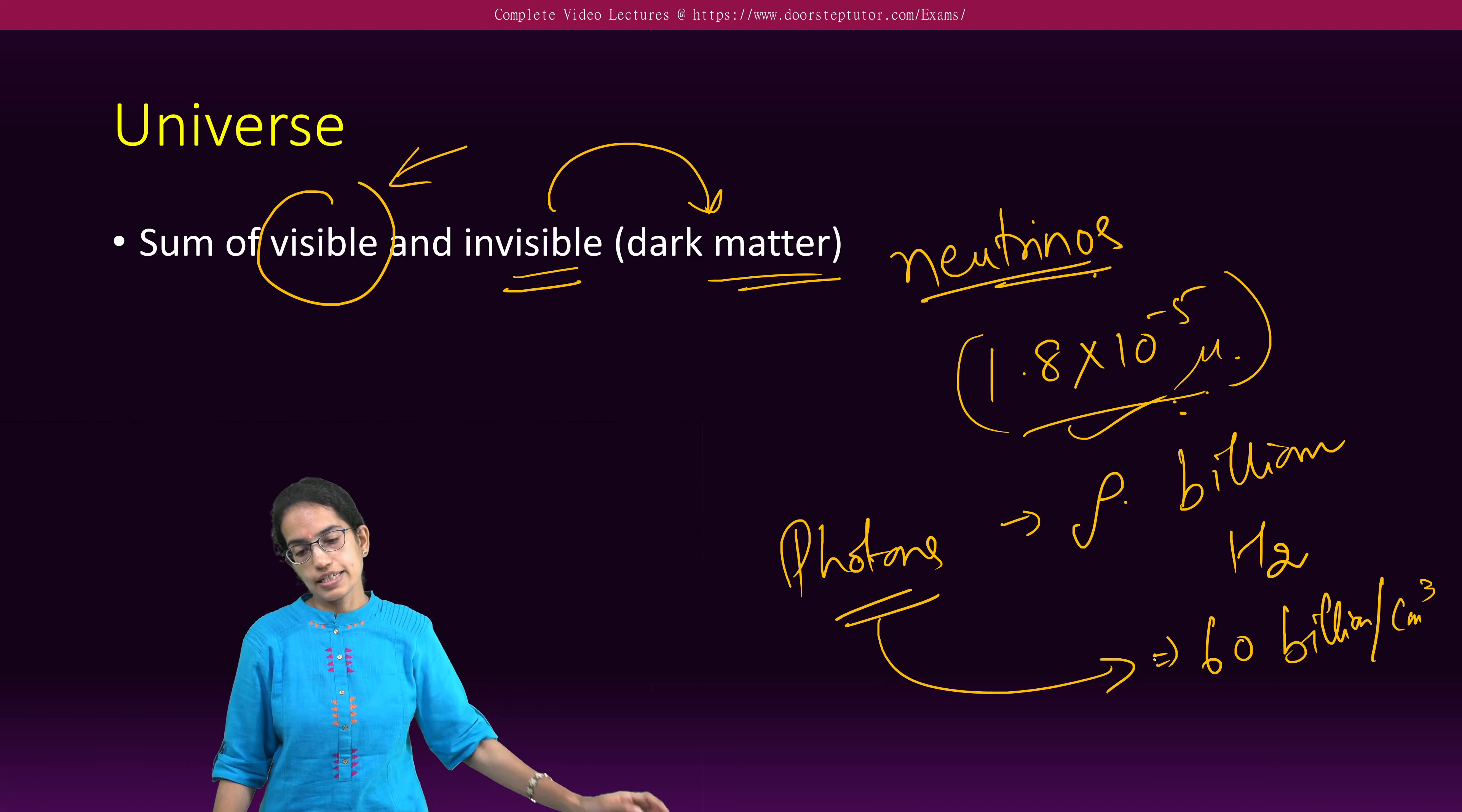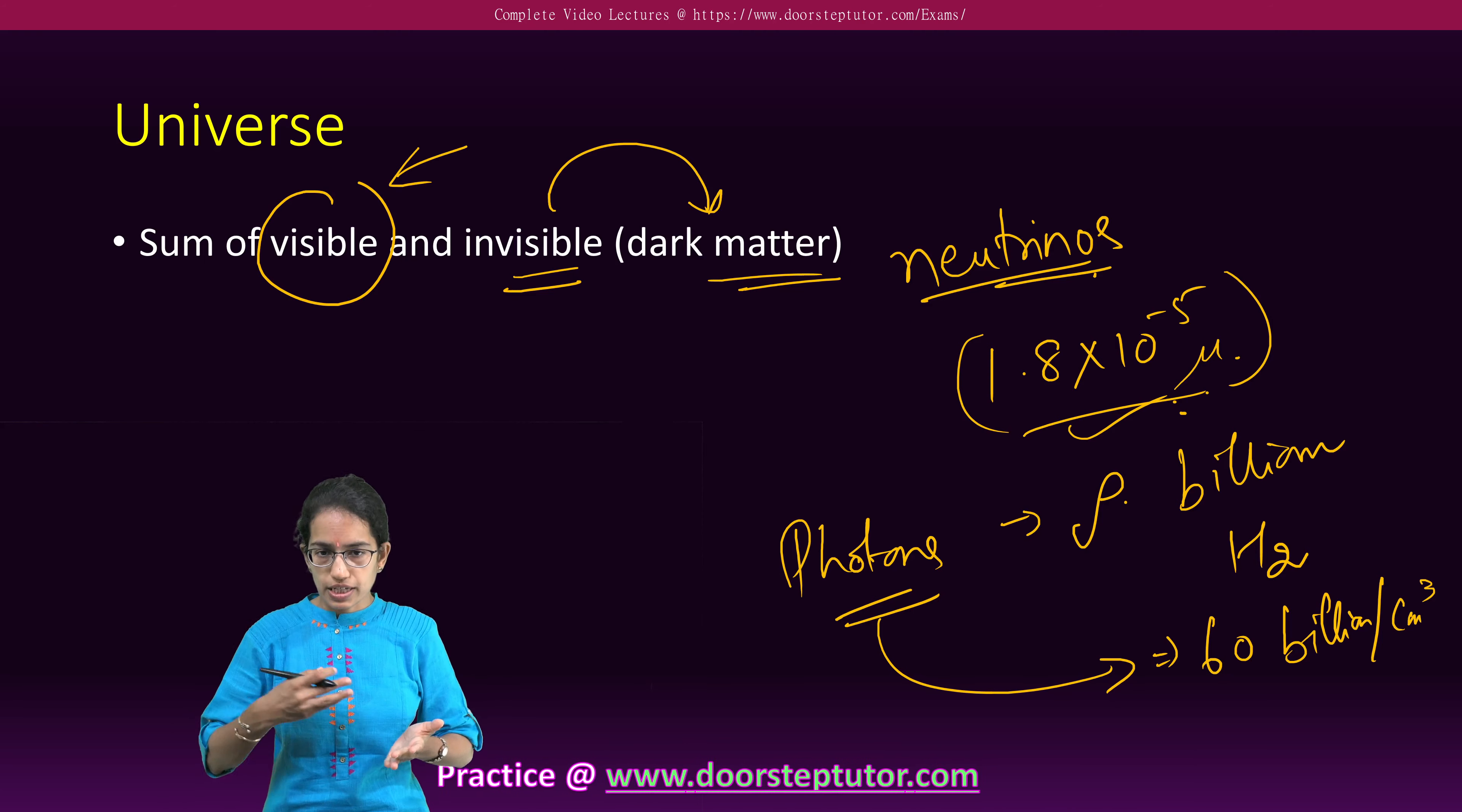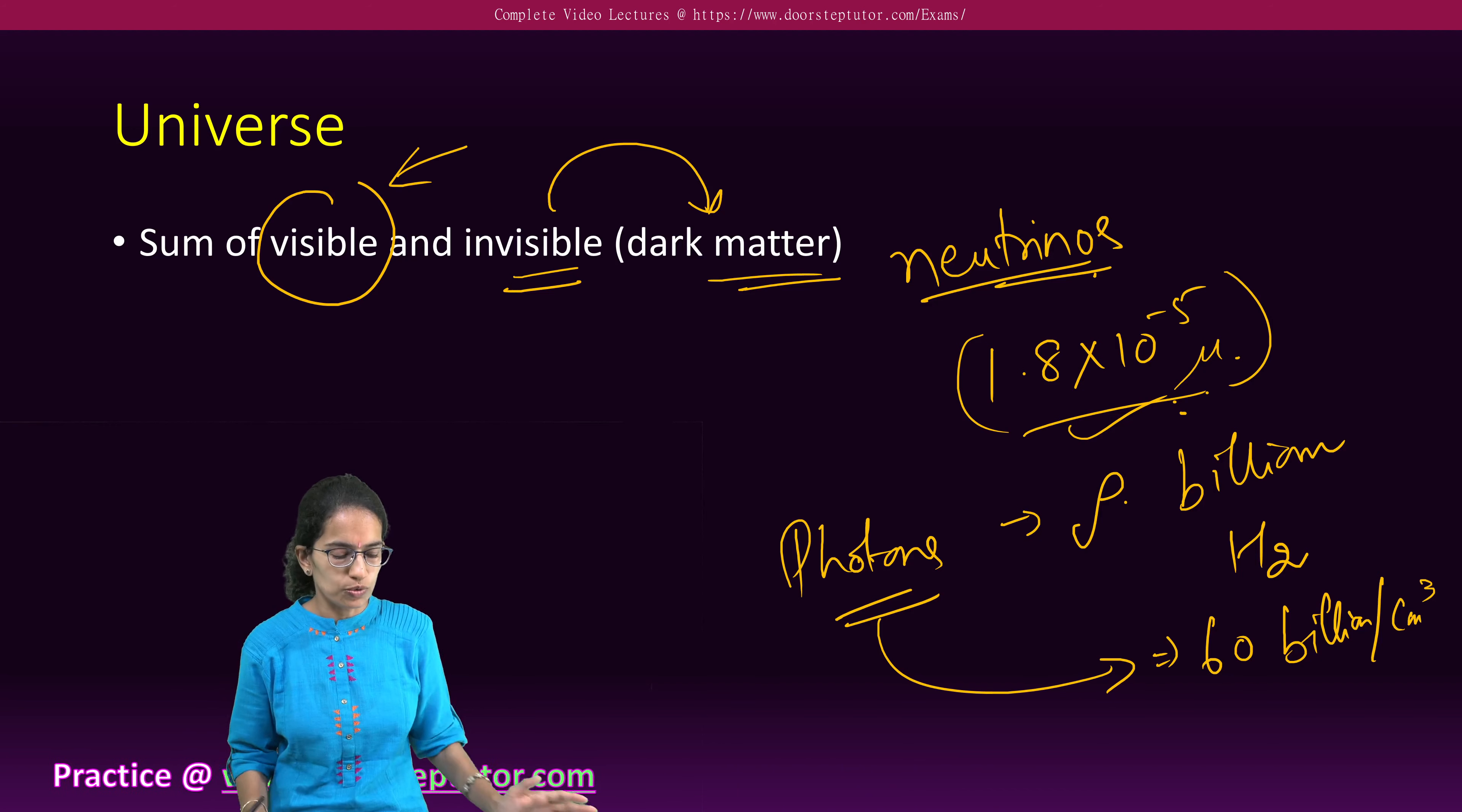Now understanding the photons which are present in this invisible matter, these photons have a density which is billion times more than hydrogen, which is somewhere around 60 billion per centimeter cube. Now with such a high density of photons, these photons are seen in microwaves, radio waves, x-rays, ultraviolet rays and even in visible rays, gamma rays.